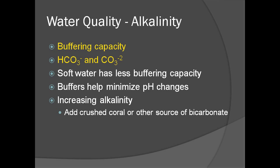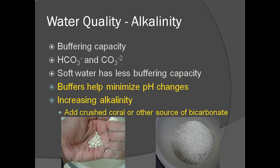Alkalinity refers to the buffering capacity of the water and is determined by the amount of carbonate and bicarbonate present. In general, because it has lower amounts of mineral salts, soft water has less buffering capacity. The buffering capacity is important in minimizing changes in pH and can be increased by adding crushed coral or other sources of bicarbonate.